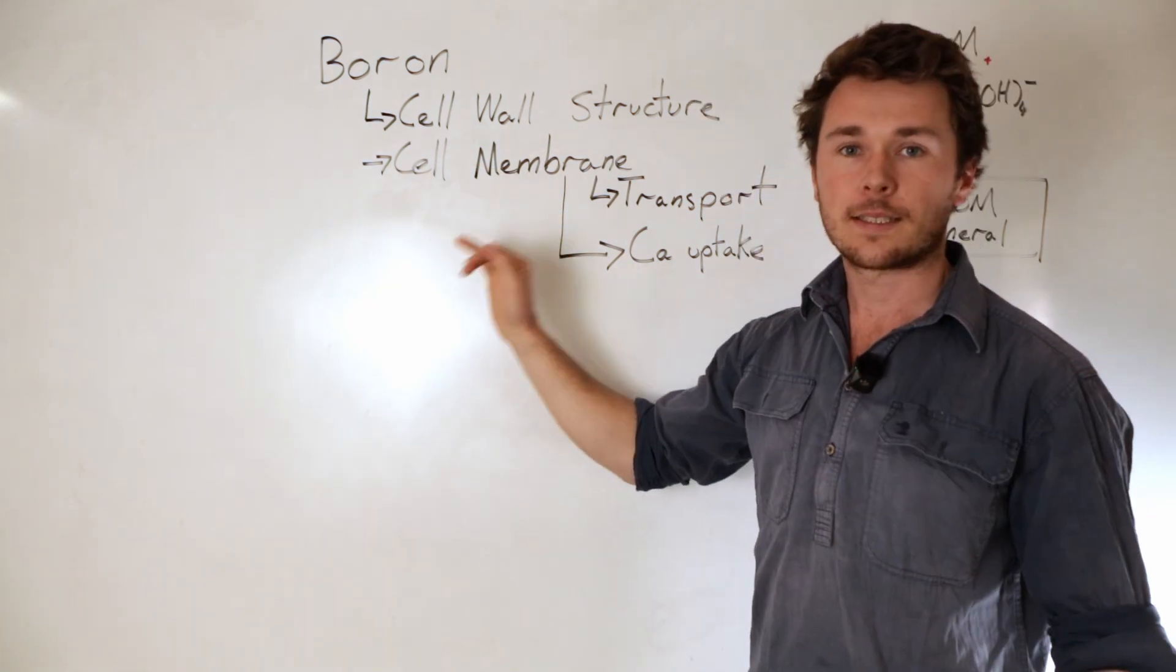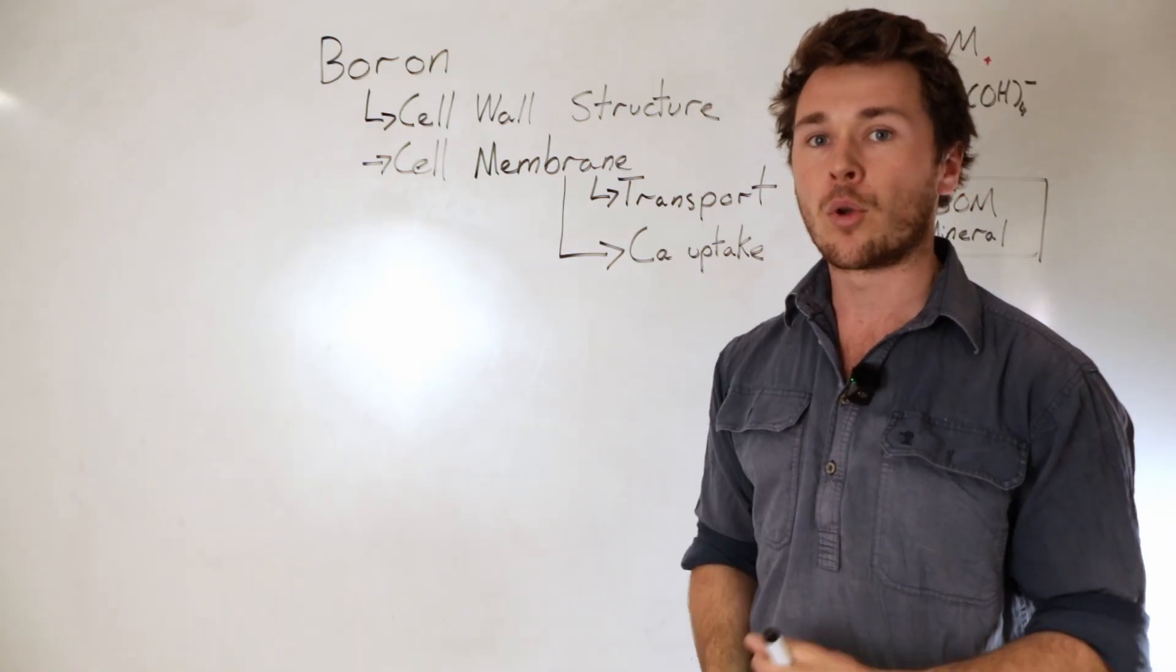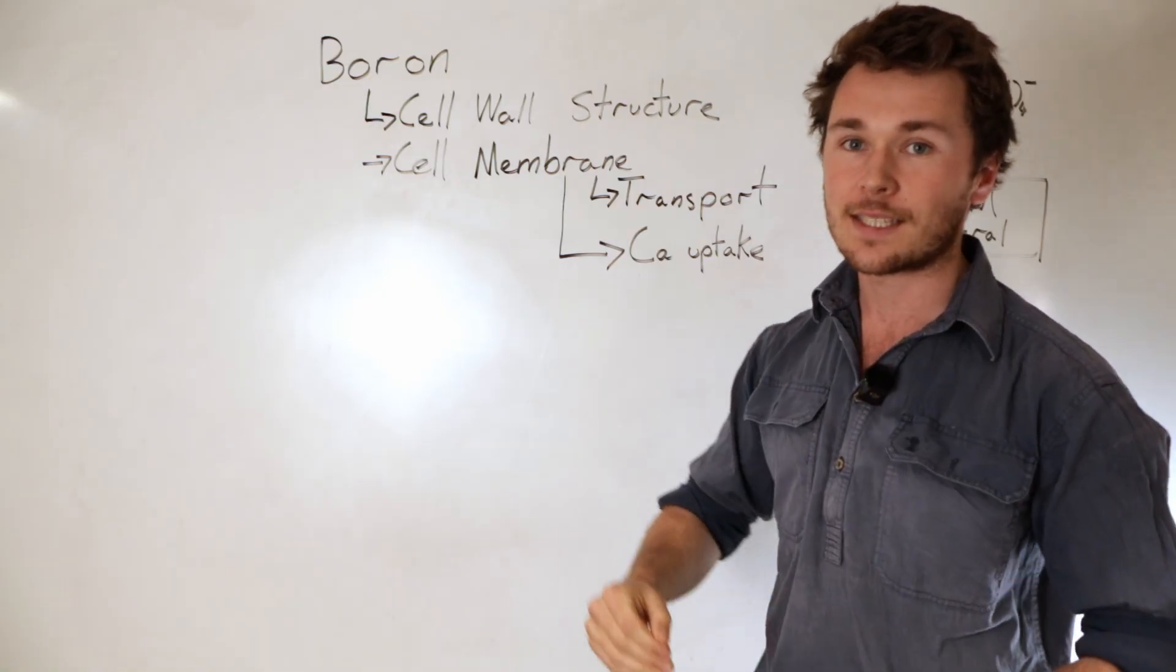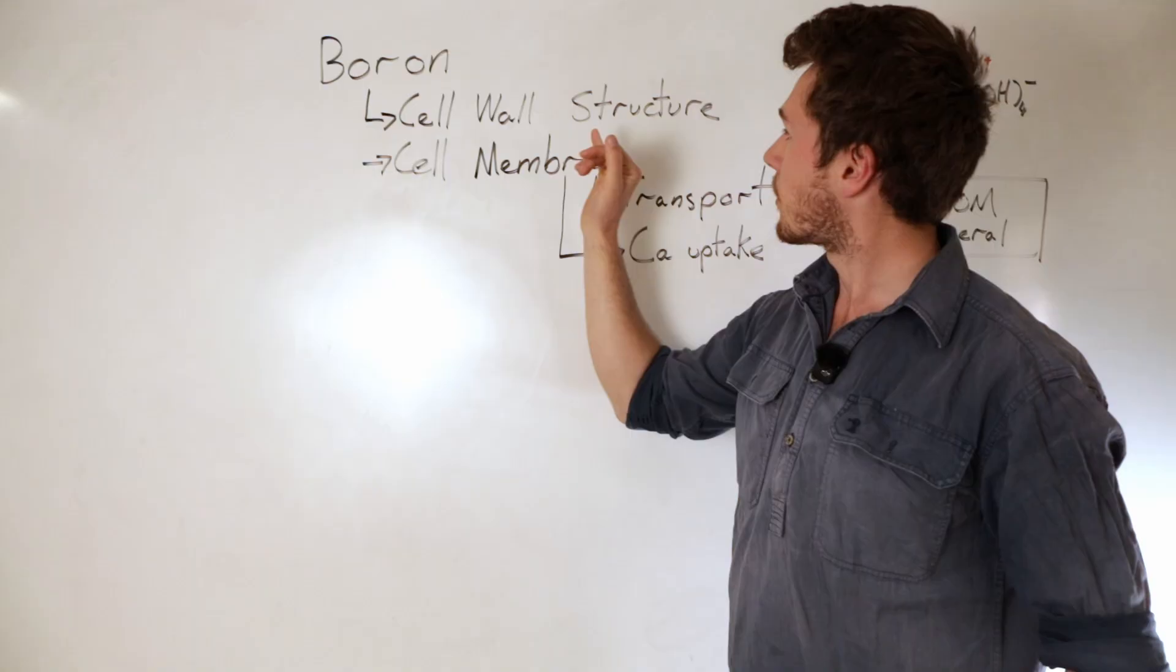The main thing with boron is that it's required in cell walls, and because it's required in cell walls, it's very immobile, which means the first place you're going to get a deficiency is in your youngest leaves. In the cell wall, it's required for its structure.